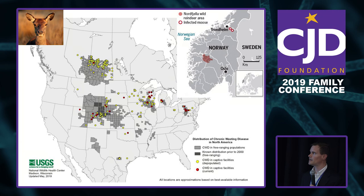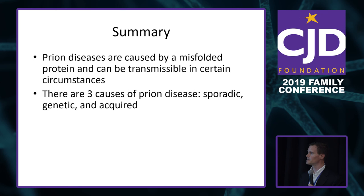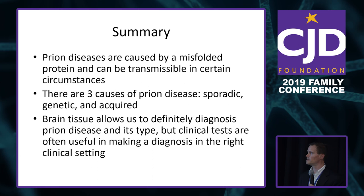In summary, prion disease can be caused by a misfolded protein and be transmissible in certain circumstances. There are three primary causes — sporadic, genetic, and acquired. Brain tissue allows us to definitively diagnose the disease, but we now have much better diagnostic tests than even four years ago.